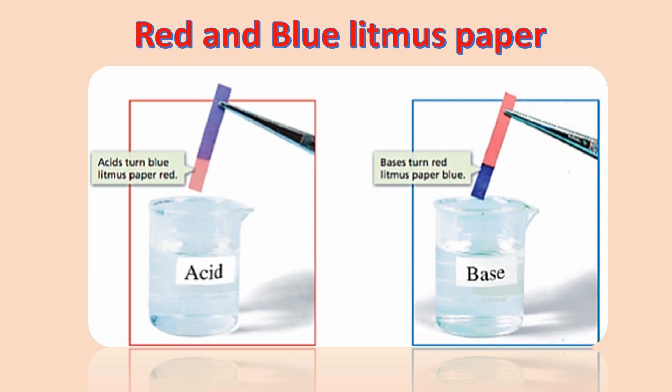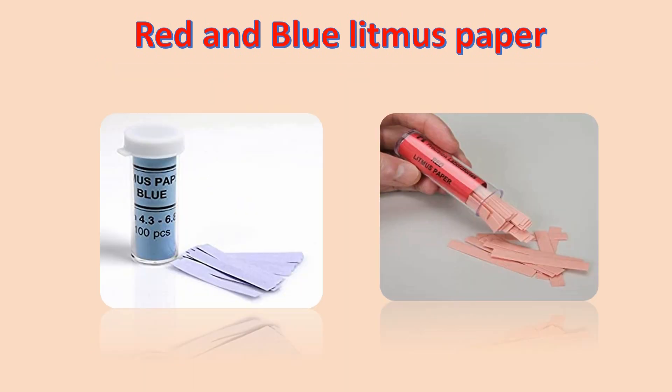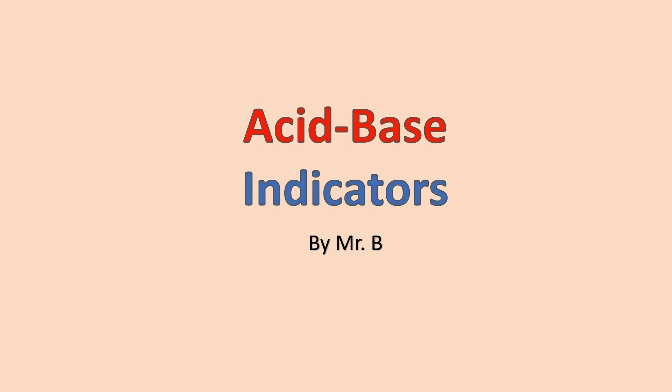Red and blue litmus paper: use blue litmus paper to test for an acid, and use red litmus paper to test for a base. This image shows actual red and blue litmus paper. This concludes the lesson on acid base indicators.